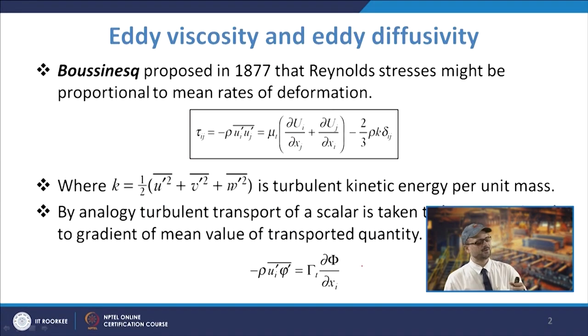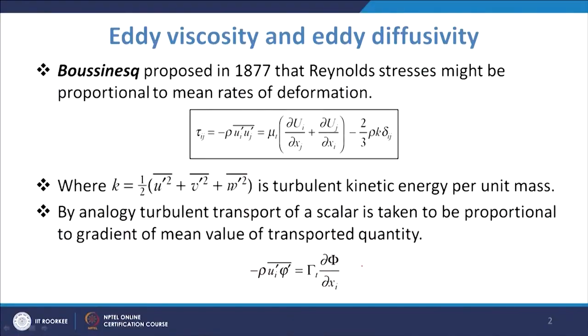Coming to the different turbulence models — we have the mixing length model, which describes the stress by means of a simple algebraic formula for μ_t as a function of position. A characteristic length l_m (the mixing length) is taken, and μ_t is expressed in terms of that length.